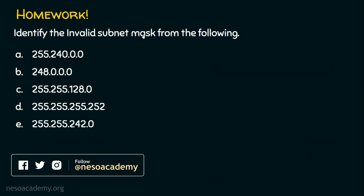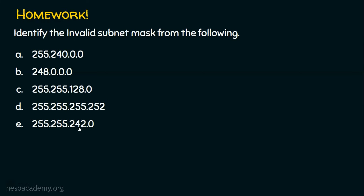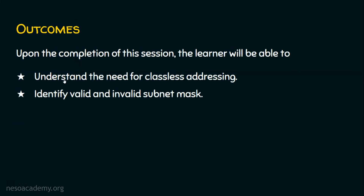Homework question: identify the invalid subnet mask from the following options — A) 255.240.0.0, B) 248.0.0.0, C) 255.255.128.0, D) 255.255.255.252, E) 255.255.242.0. Post your answer in the comments. I hope you now understand the need for classless addressing and can identify valid and invalid subnet masks. Thank you for watching!